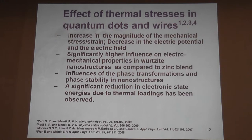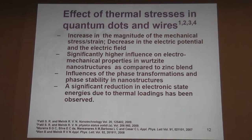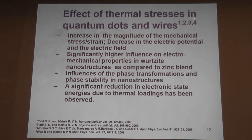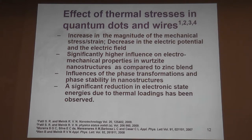The next topic I mentioned is thermal stresses, which are extremely important and very often ignored. In fact, increasing the magnitude of the mechanical stress strain, you will observe decreasing electric potential and electric field. The structure to study here shows a significantly higher influence of electromechanical properties specifically in wurtzite nanowire structures compared to zinc-blende nanowire structures. Also left aside from this talk is the influence of phase transformations and phase stability in nanowire structures.